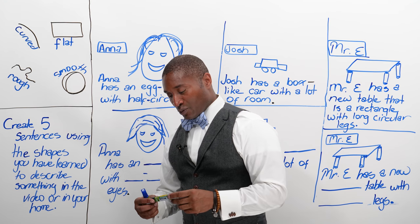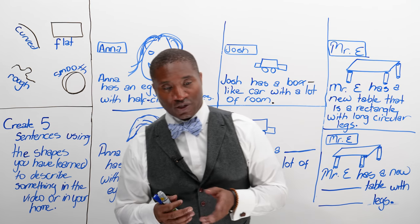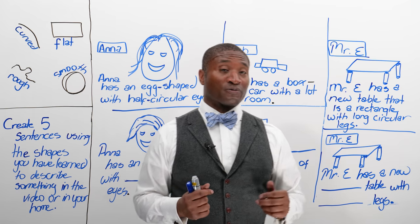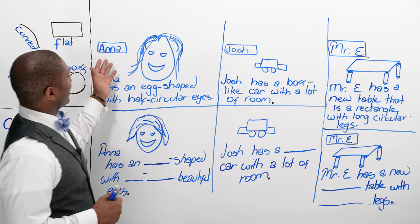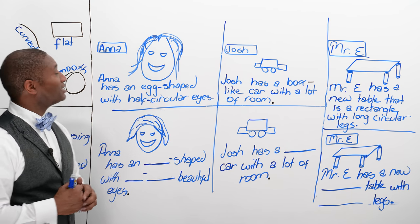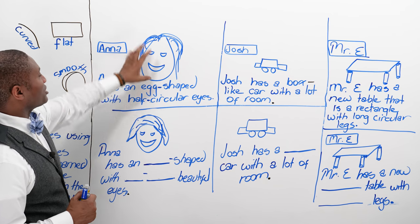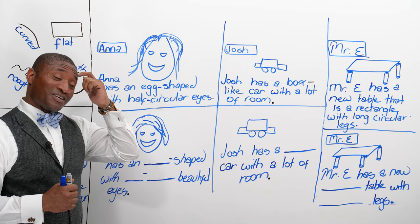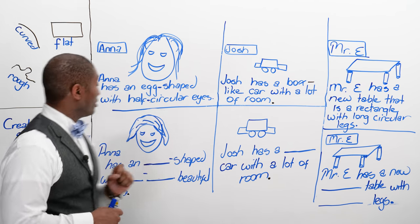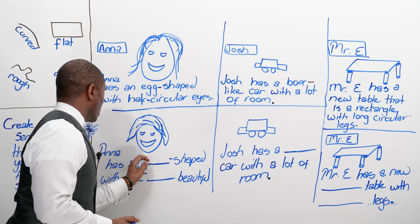Now that we've learned a few new shapes, let's put them to practice. In the first picture, I want to show you how we can use them to describe people or parts of people. Let's take an Anna. This Anna is a grot — a grot is an English word for an unattractive individual. Anna has an egg-shaped head with half-circular eyes. That does not sound very attractive or appealing at all.